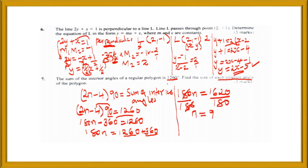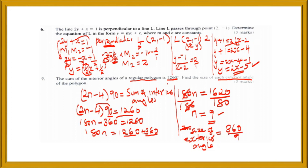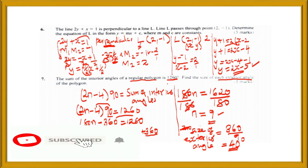Now that we know it has 9 sides, to get the size of each exterior angle we use 360 divided by the number of sides, which is 9. This gives 40 degrees. So the size of each exterior angle of the regular polygon is 40 degrees.